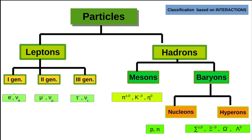Under leptons, common examples are electrons, muons, and tauons, and we must remember that their respective neutrinos and antineutrinos are also leptons. Leptons are classified into three generations: first generation includes electrons and electron neutrinos and their antiparticles; second generation includes muons and muon neutrinos and their antiparticles; third generation includes tauons and tauon neutrinos and their antiparticles.